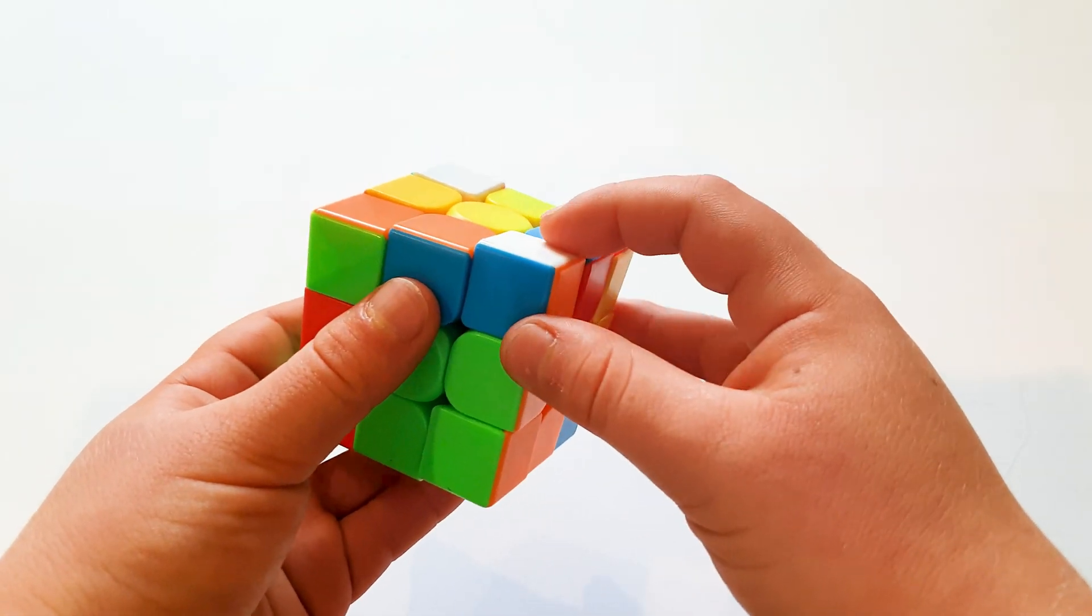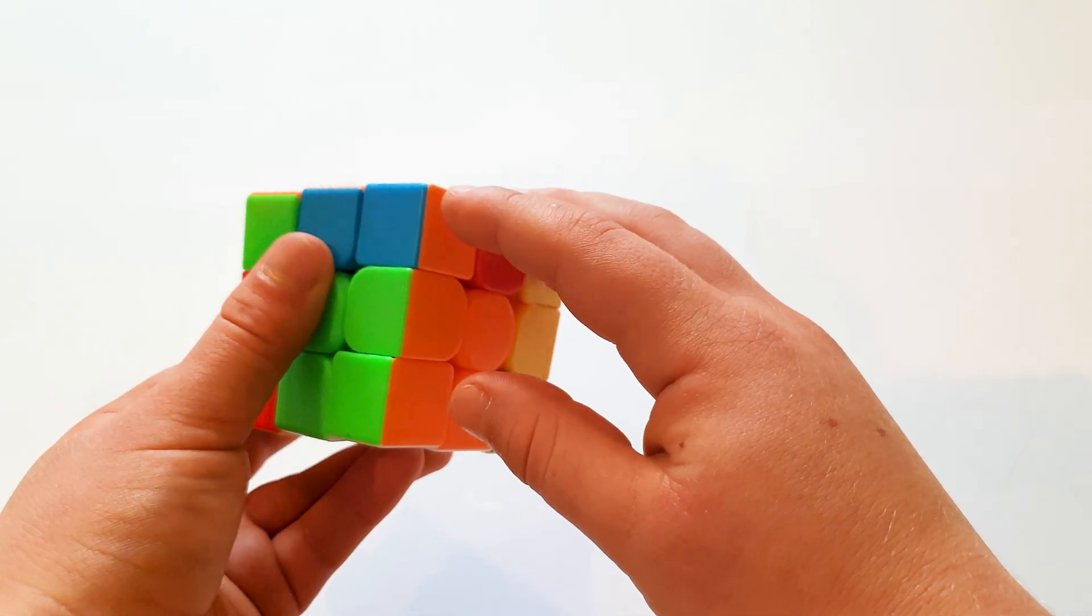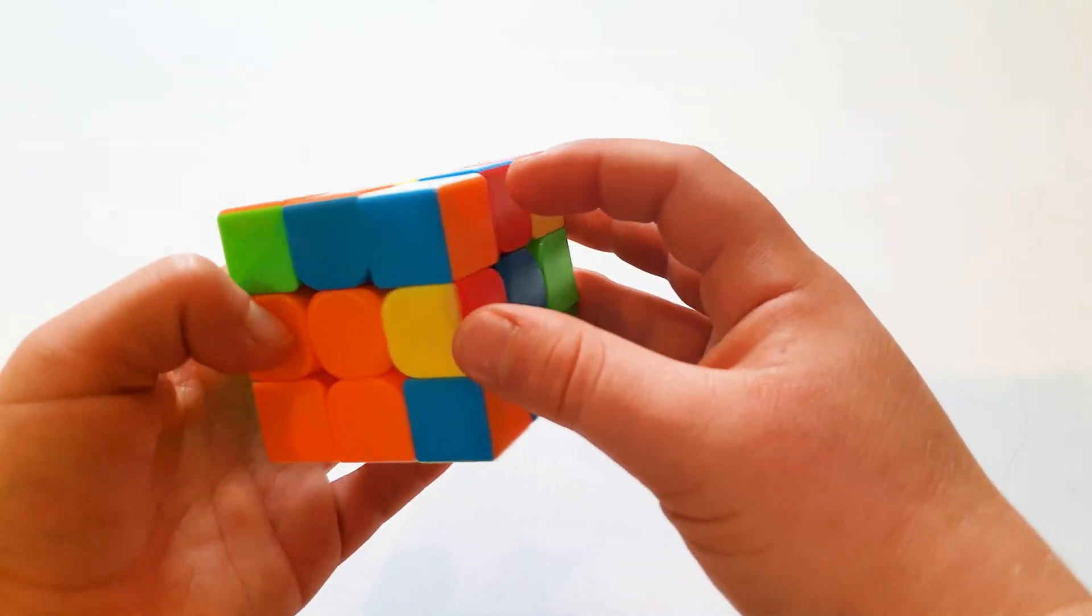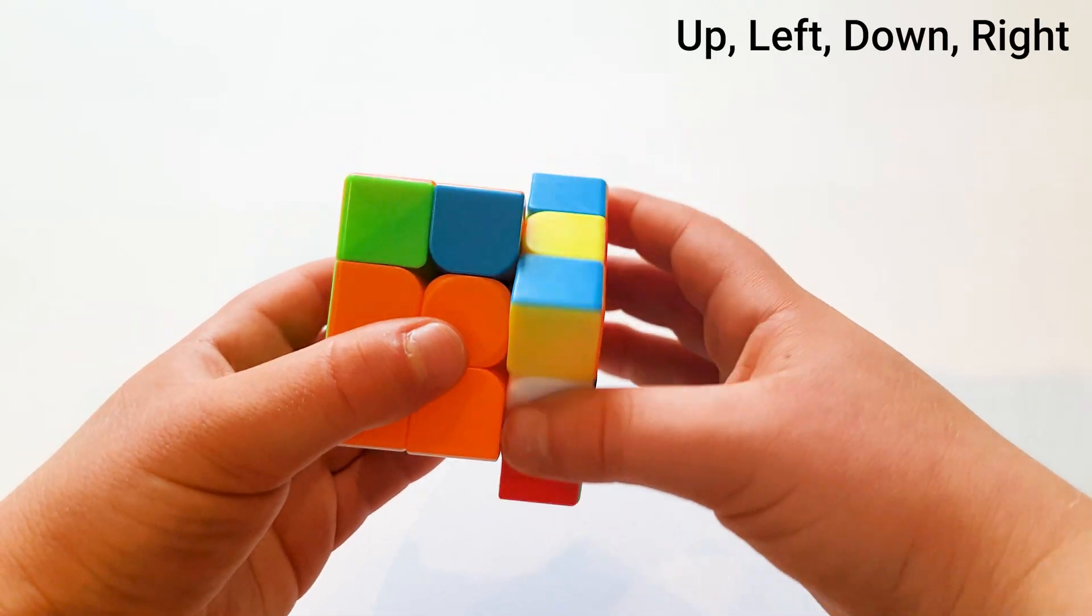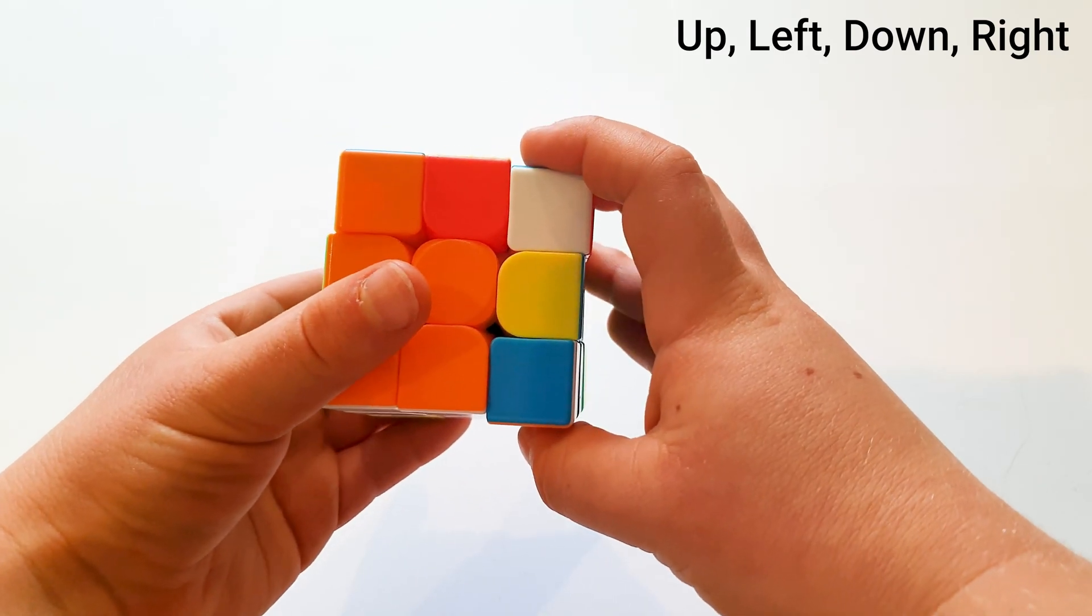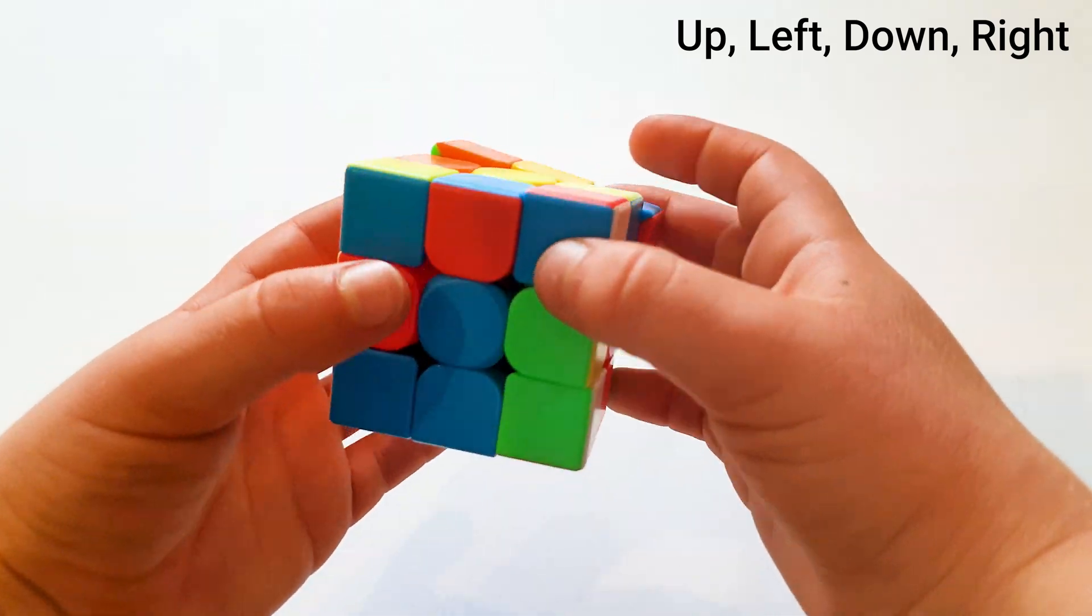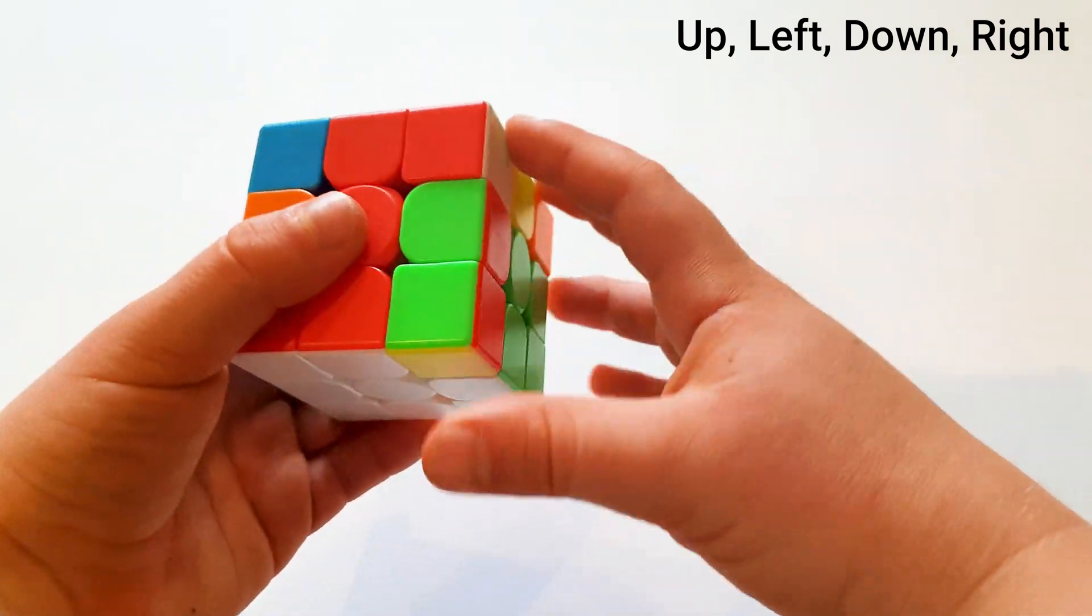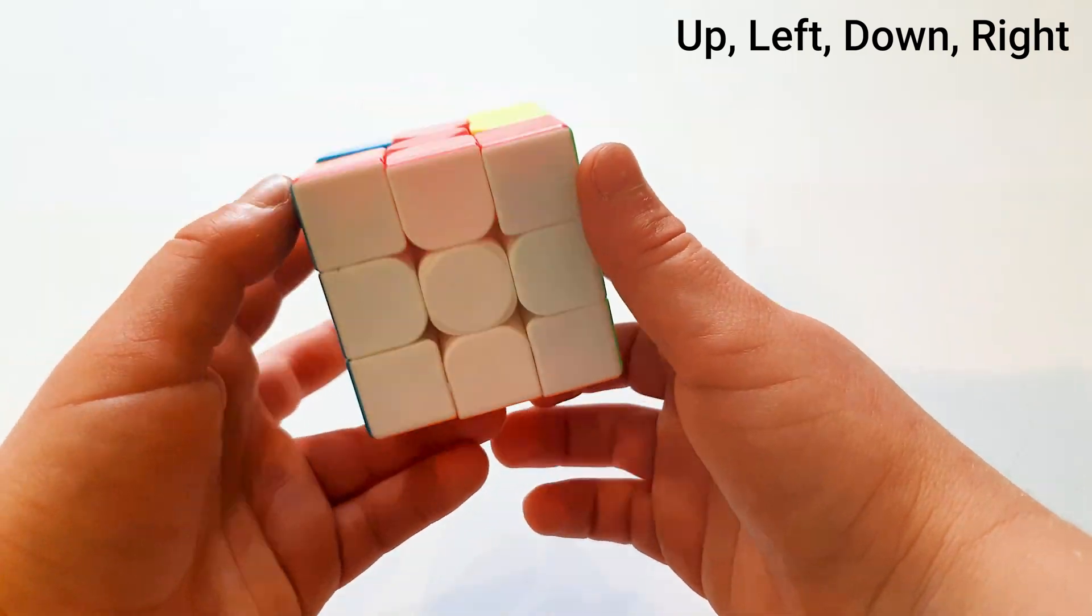Find a corner piece which has white and two other colors. For example I got white, blue and orange. And I turn the top layer until it's white, blue, orange. And I do the algorithm: Right side up, top left, right side down, top right. And I do it again until it fits. I do it with all of them. The same algorithm. And I finished it.